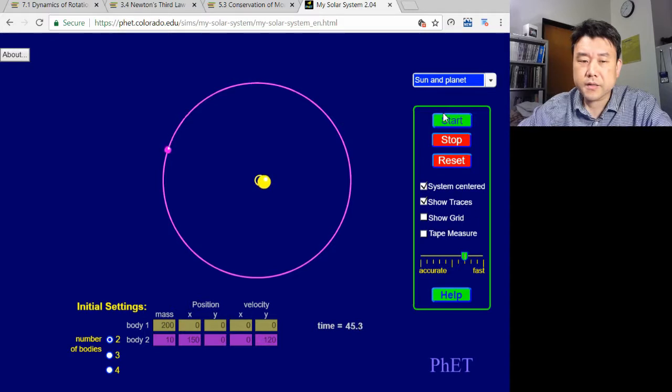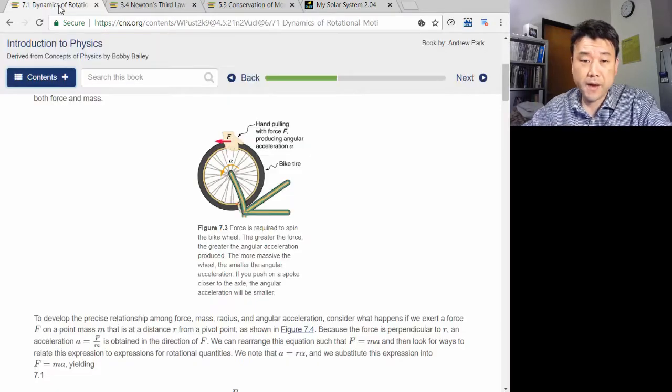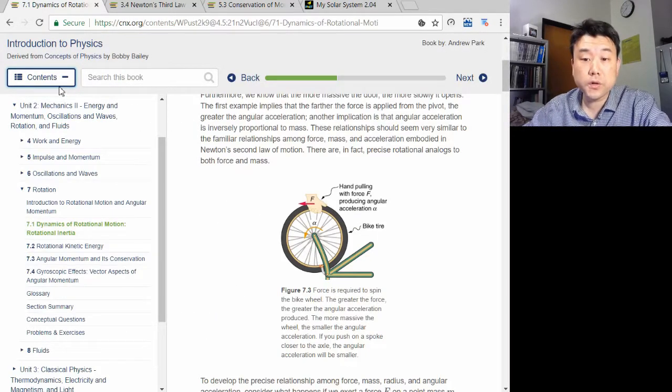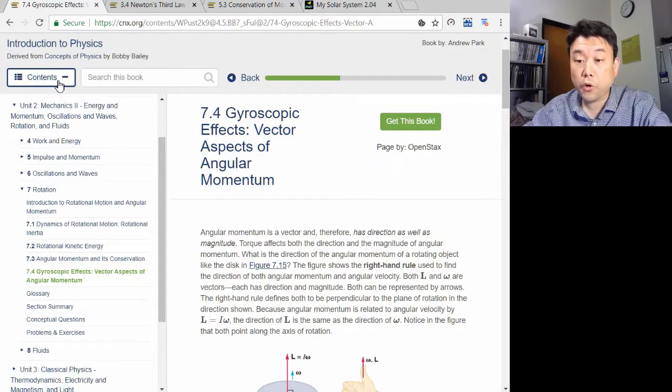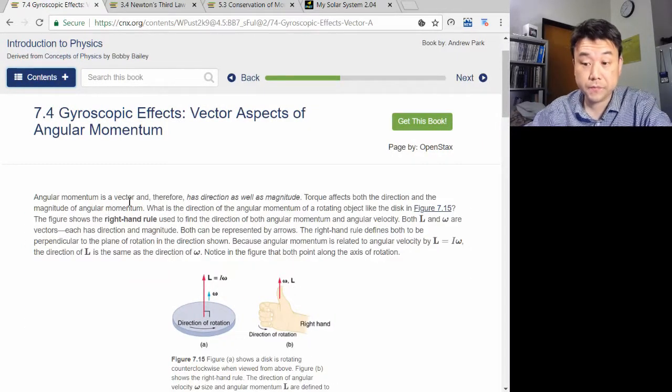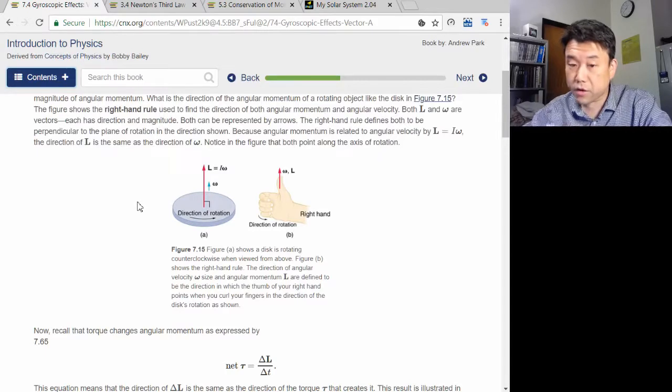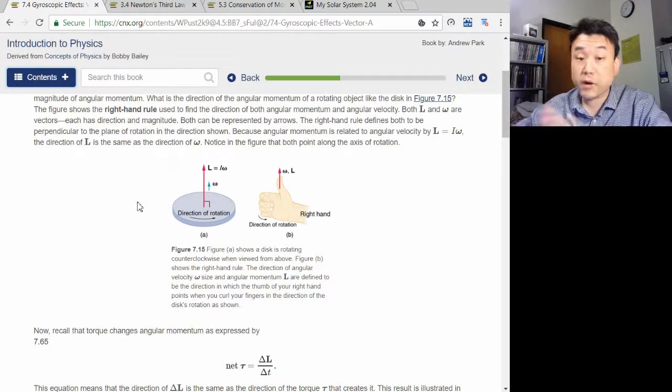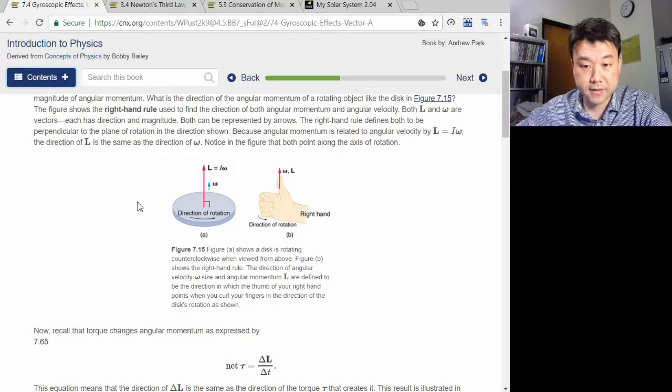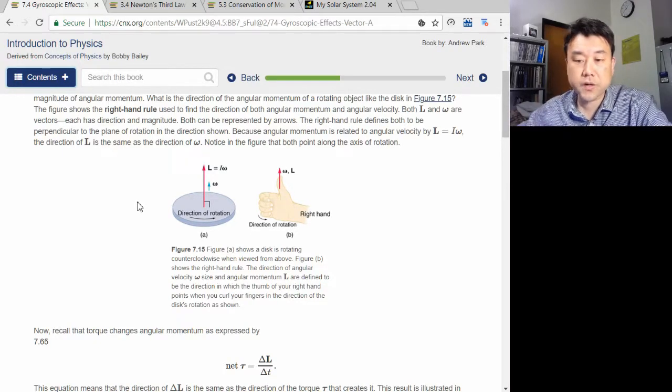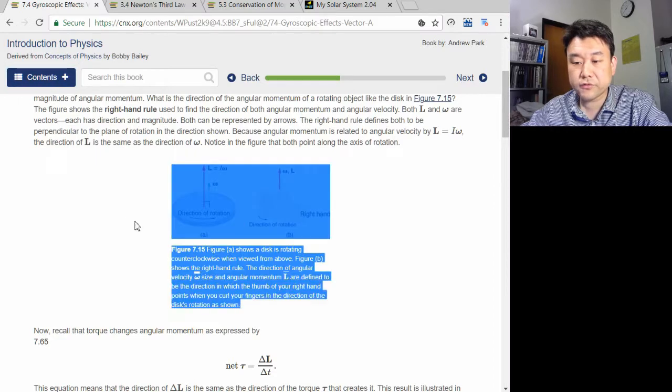There is much more to say about angular momentum and torque. For one, my treatment so far in this video ignored the vector aspect of torque and angular momentum. With torque and angular momentum, the direction matters in the full three-dimensional sense. This sense of direction is assigned using the right-hand rule.